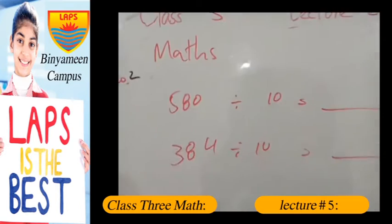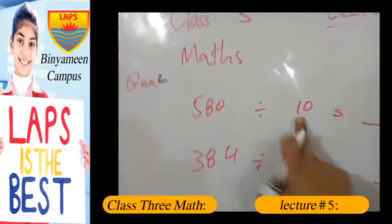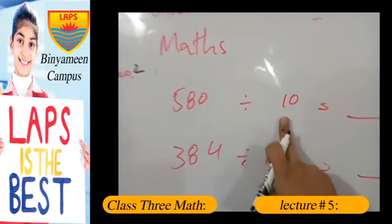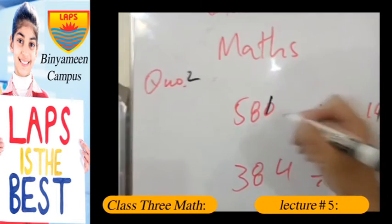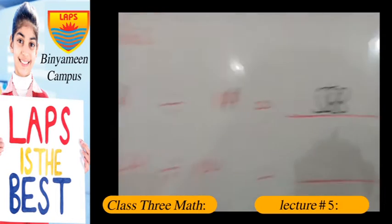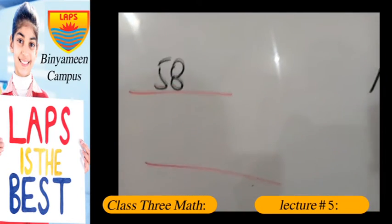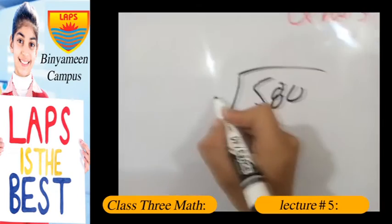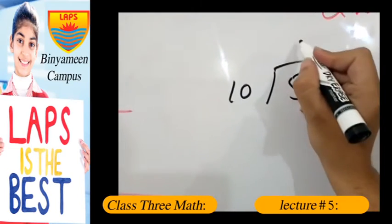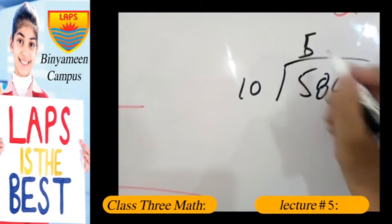Now question number 2 is actually pretty easy. We have to divide 580 by 10. So we could actually cut this 0 with this, we can get 58 as the answer. Or if you want a proper explanation, then 580 divided by 10: we get 5, 10 times 5 is 50, so 58.